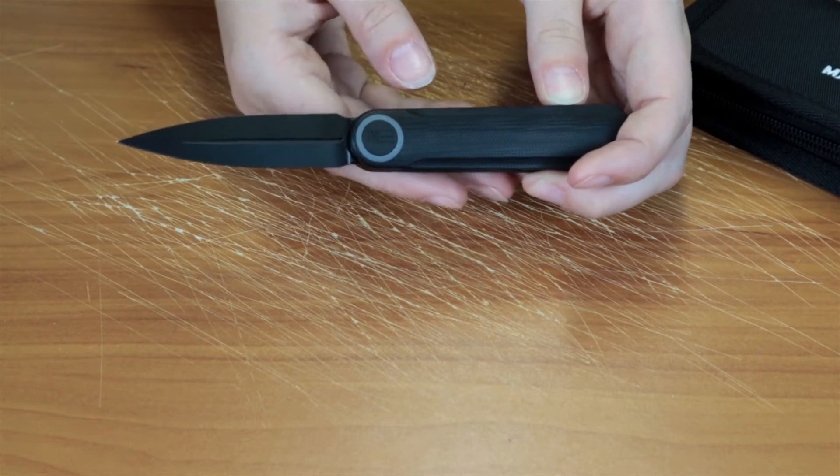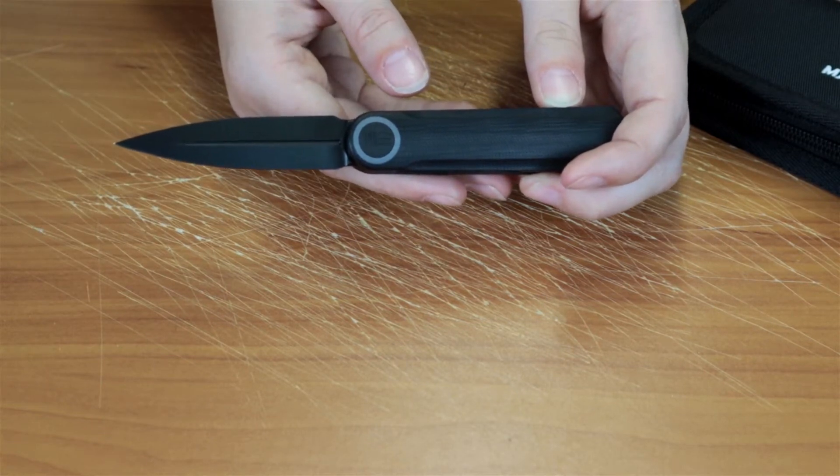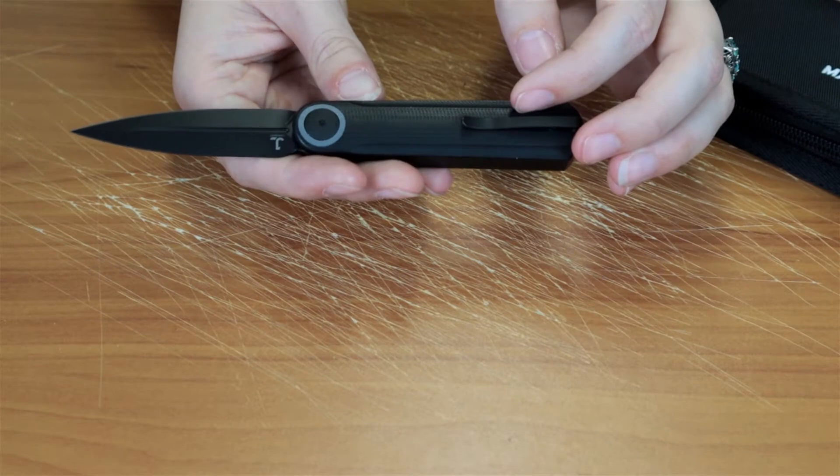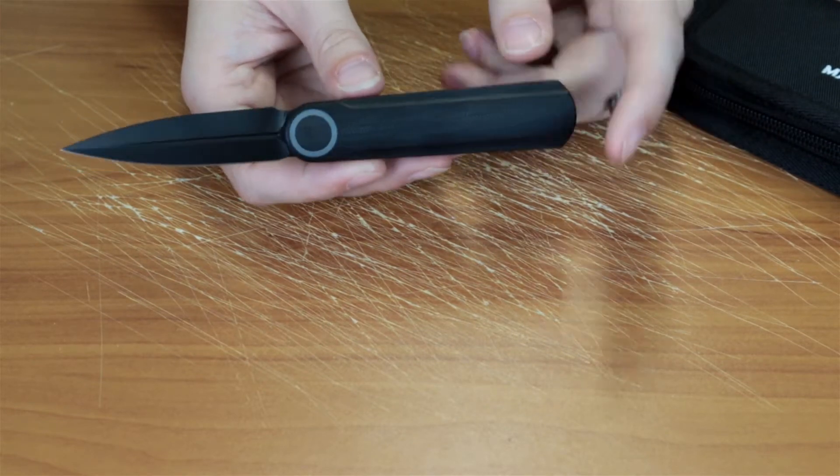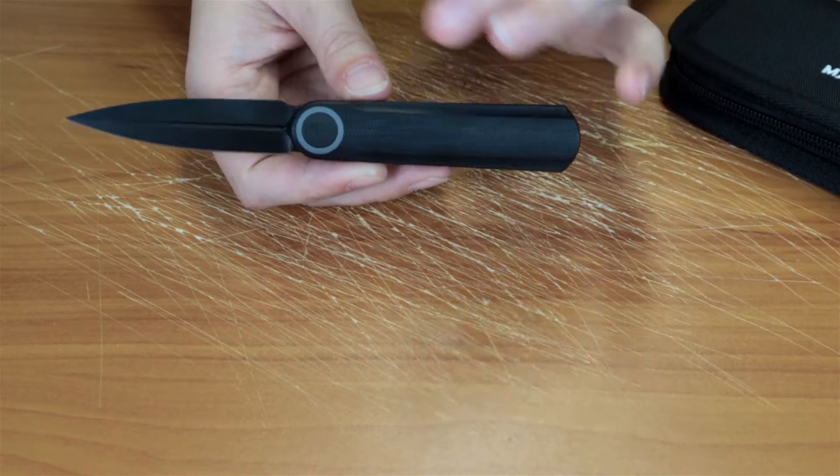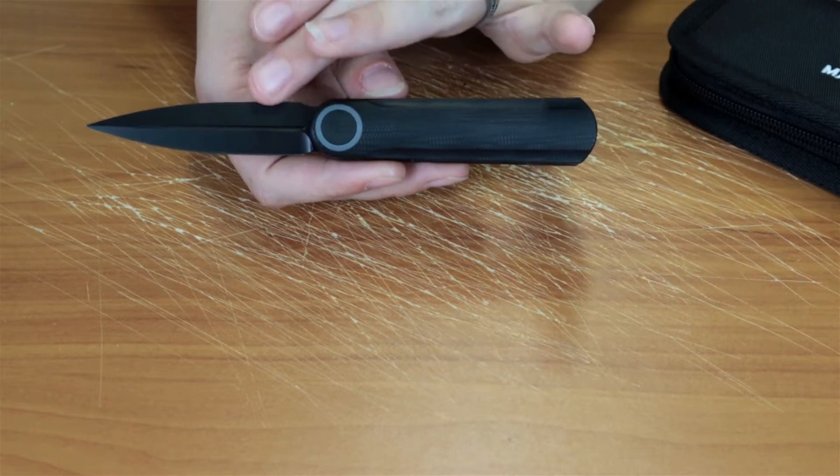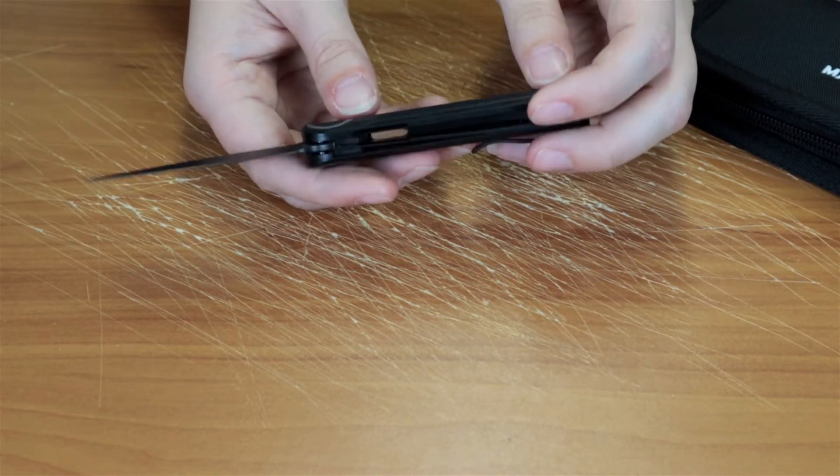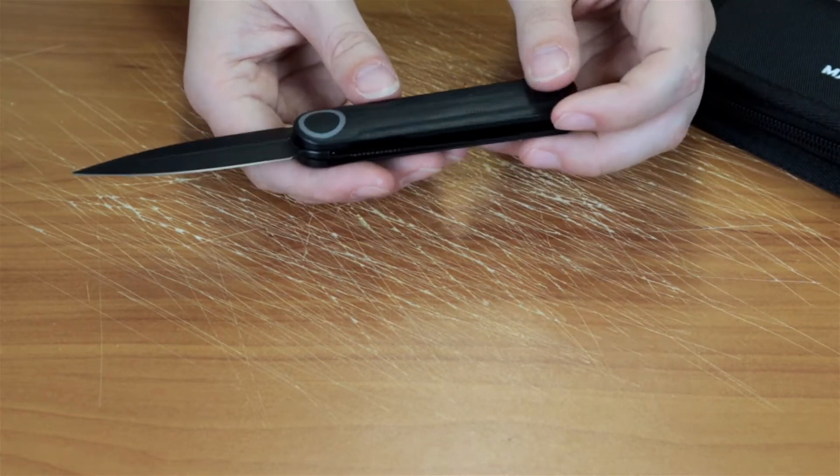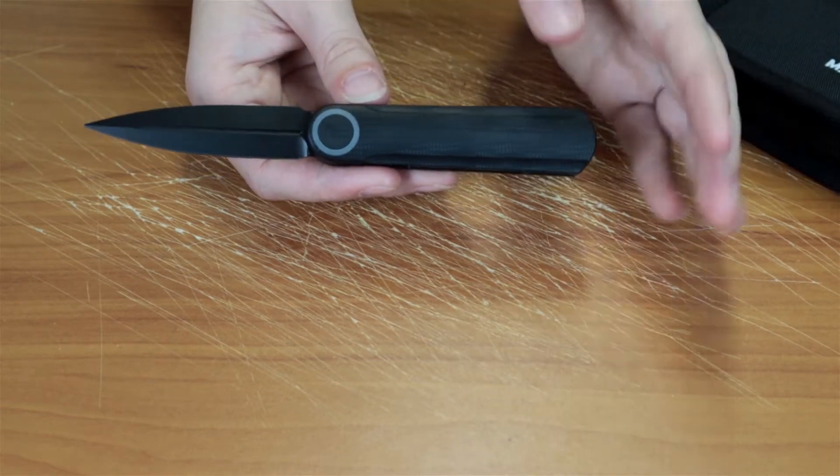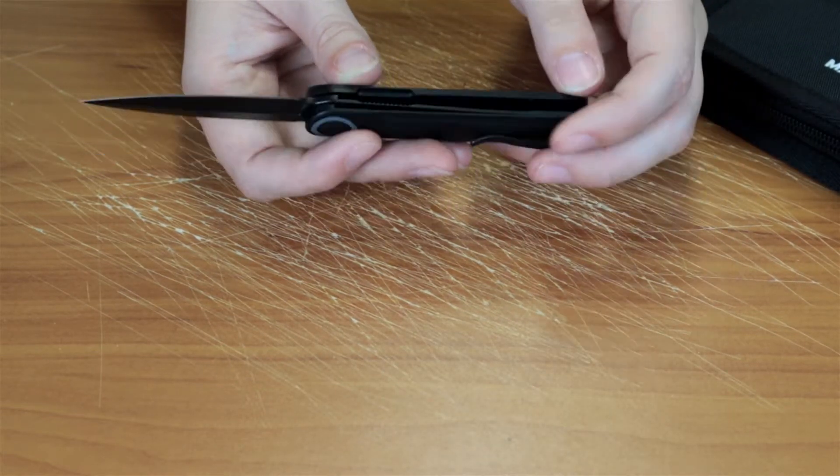They also have a drop point that comes in blackout and gray. In the drop point, they have a satin finish, black satin finish gray, and then there's also a drop point with a carbon fiber handle and satin finish. We have the blackout dagger style one.